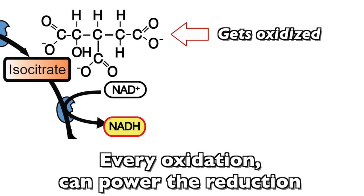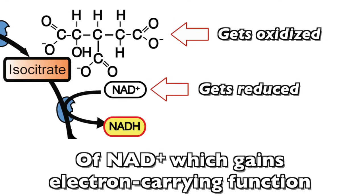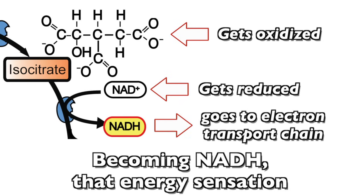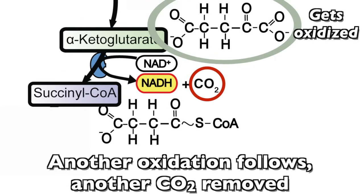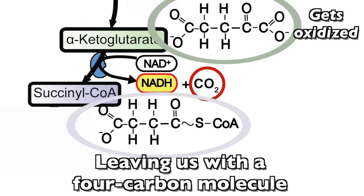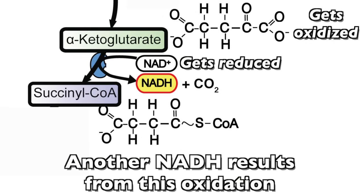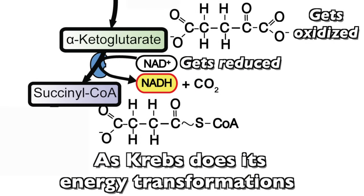Every oxidation can power the reduction of NAD+, which gains electron-carrying function. Becoming NADH, that energy sensation, which later on in respiration powers ATP creation. Another oxidation follows, another CO2 removed, leaving us with a 4-carbon molecule. Another NADH results from this oxidation, which Krebs does its energy transformations.